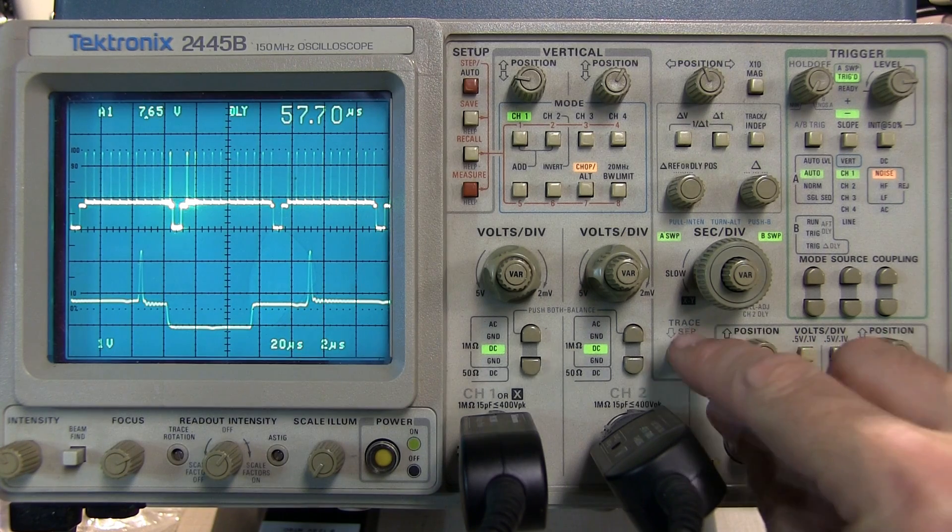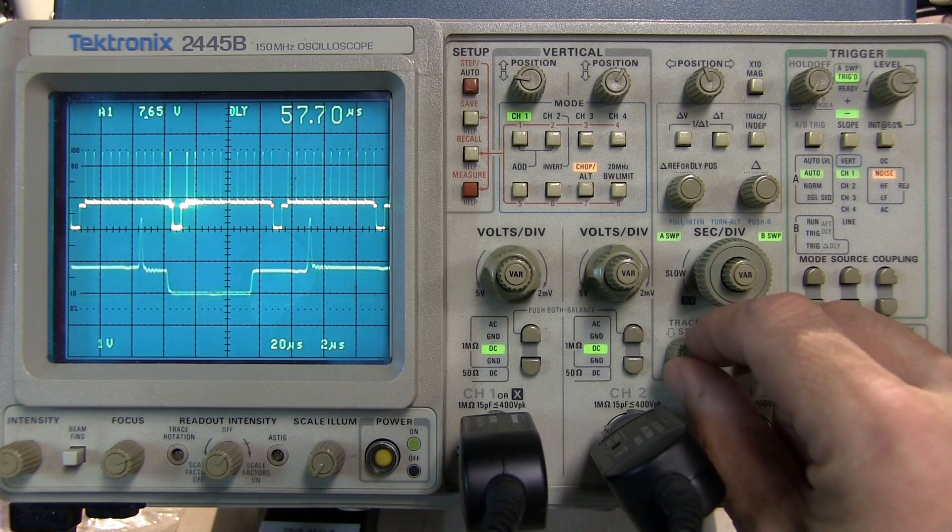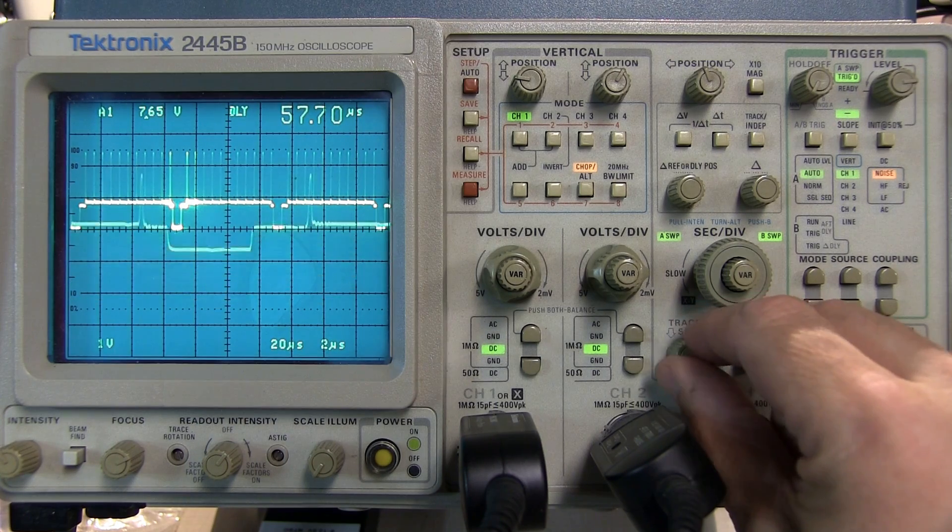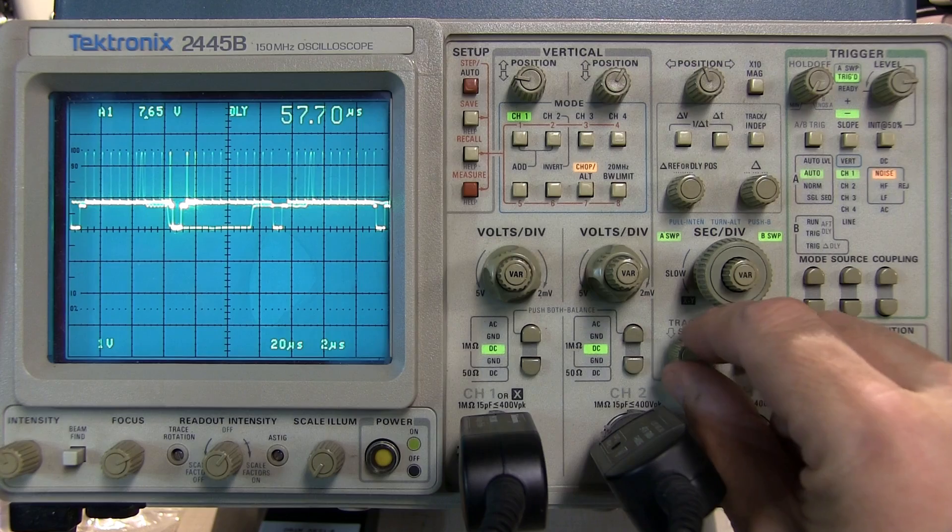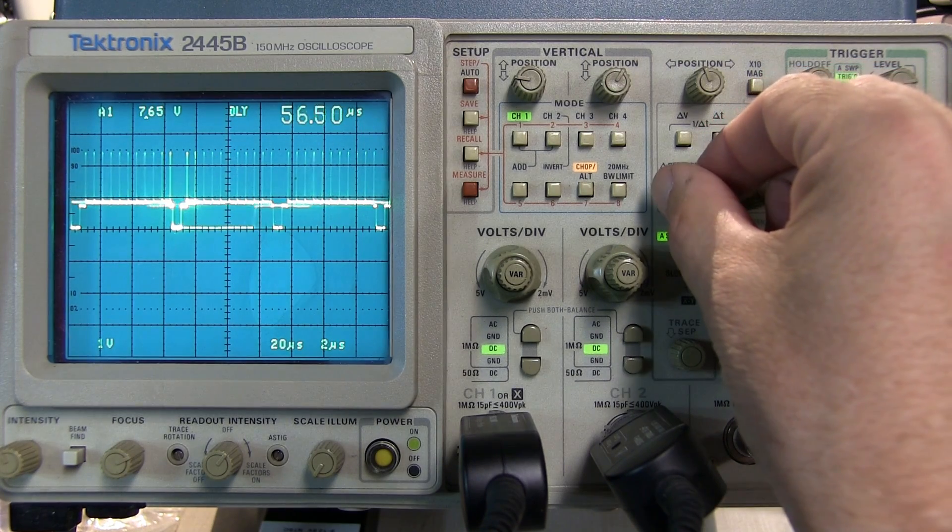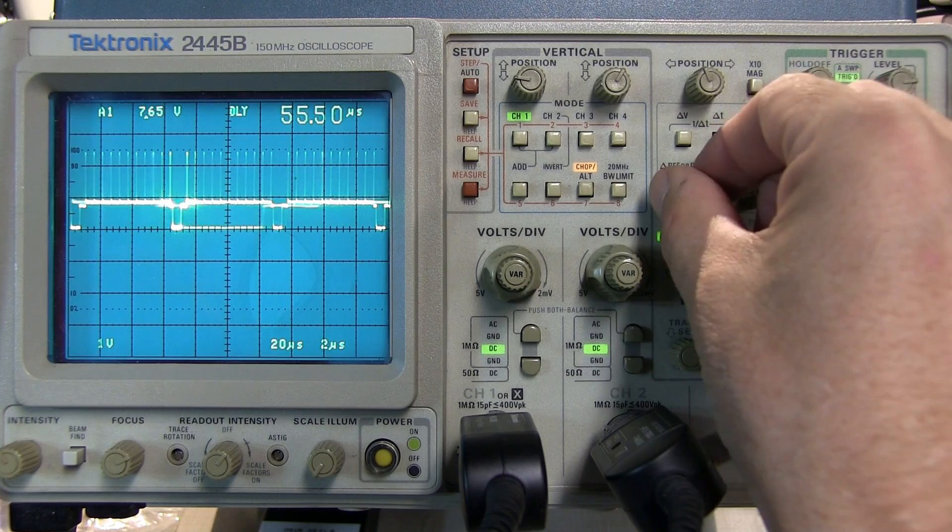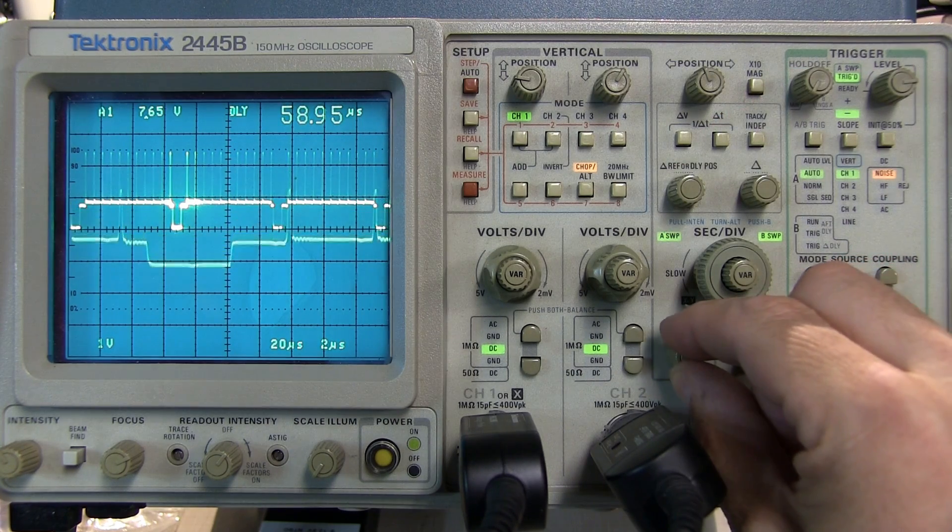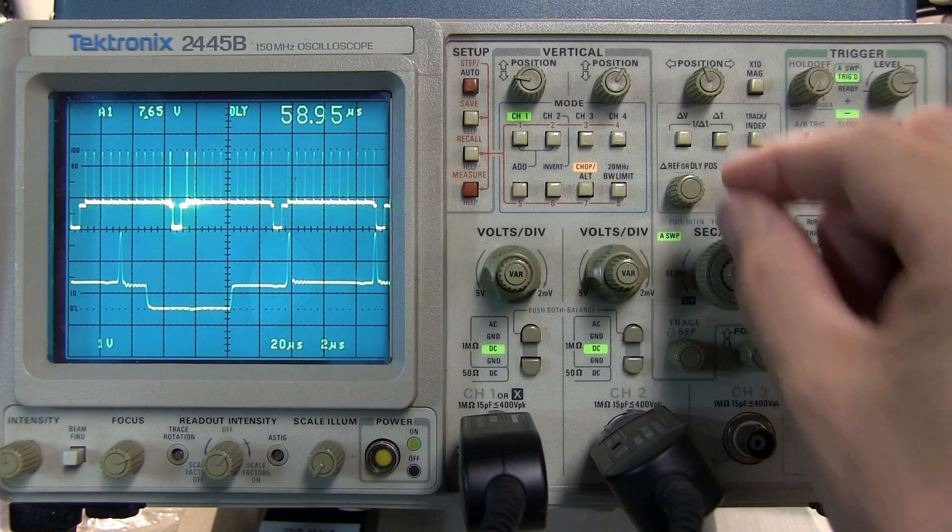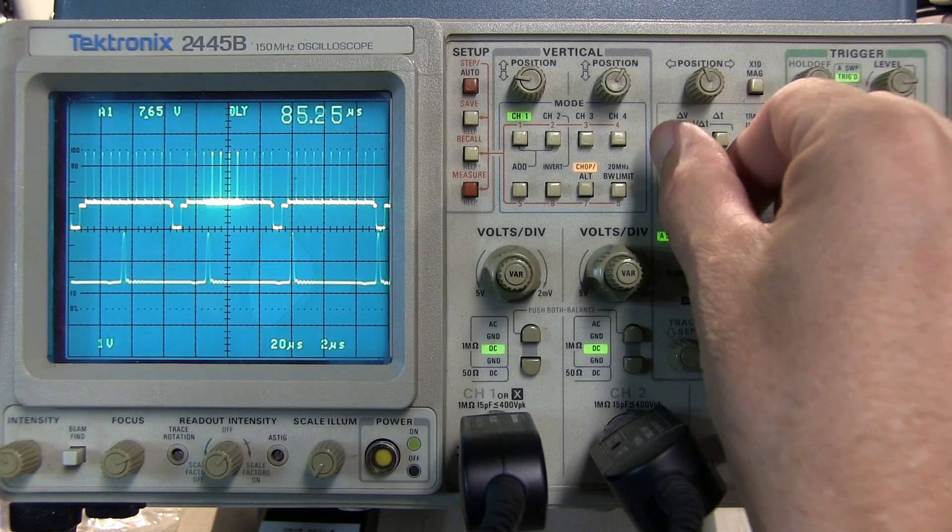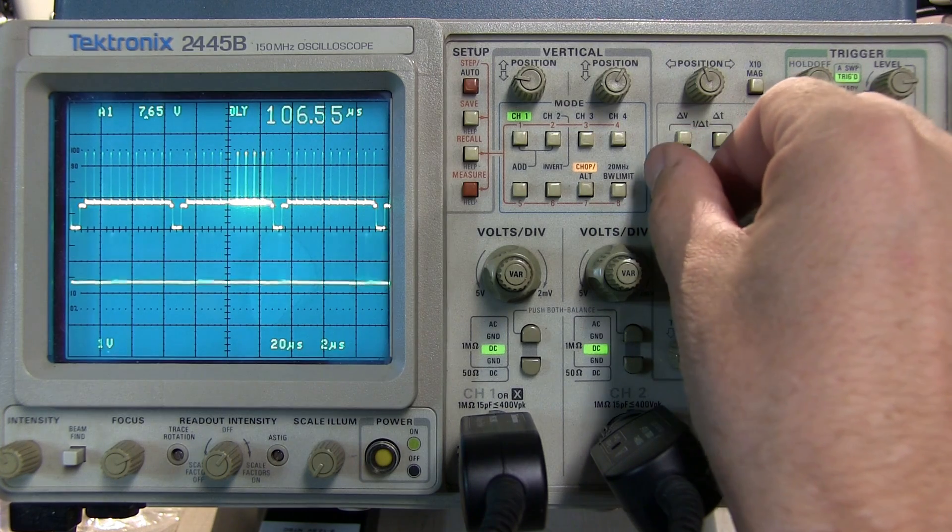There's also a trace separation control right here that allows me to control how much I separate my B time base trace from the main. Turning it all the way up the traces essentially overlap which might make it a little tough to see what's going on here but you do have that ability. By rotating this down we can separate those waveforms and now slide through our waveform here to look at any portion in greater detail.